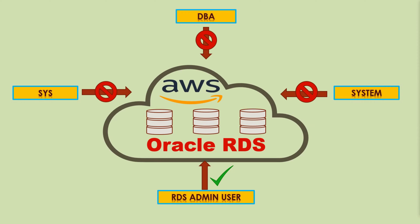In an RDS instance, the traditional data pump expdp/impdp commands cannot be executed at the OS prompt. Instead, we have to use certain APIs or packages made available in the RDS database, along with an S3 bucket as a staging area to accomplish our task. I assume you already know about Amazon S3 — the Simple Storage Solution — which is a cloud storage option provided by AWS.